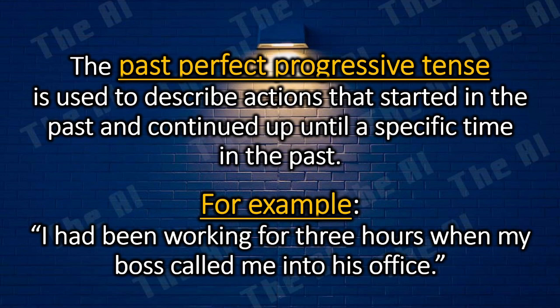The past perfect progressive tense is used to describe actions that started in the past and continued up until a specific time in the past. For example, I had been working for three hours when my boss called me into his office.